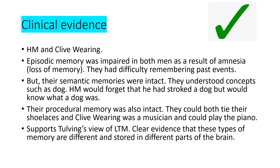Now for AO3. Our first strength is clinical evidence. We can look at H.M. and Clive Wearing — their episodic memory was impaired in both of them as a result of amnesia, so they had difficulty remembering past events they'd experienced. But their semantic memories were intact: they understood concepts such as 'dog', though H.M. couldn't remember that he'd stroked a dog half an hour before. Their procedural memory was also intact — they could both tie their shoelaces, and in Clive Wearing's case he could also play the piano. This supports Tulving's view of long-term memory because we have clear evidence that these types of memory are different and are stored in different parts of the brain.